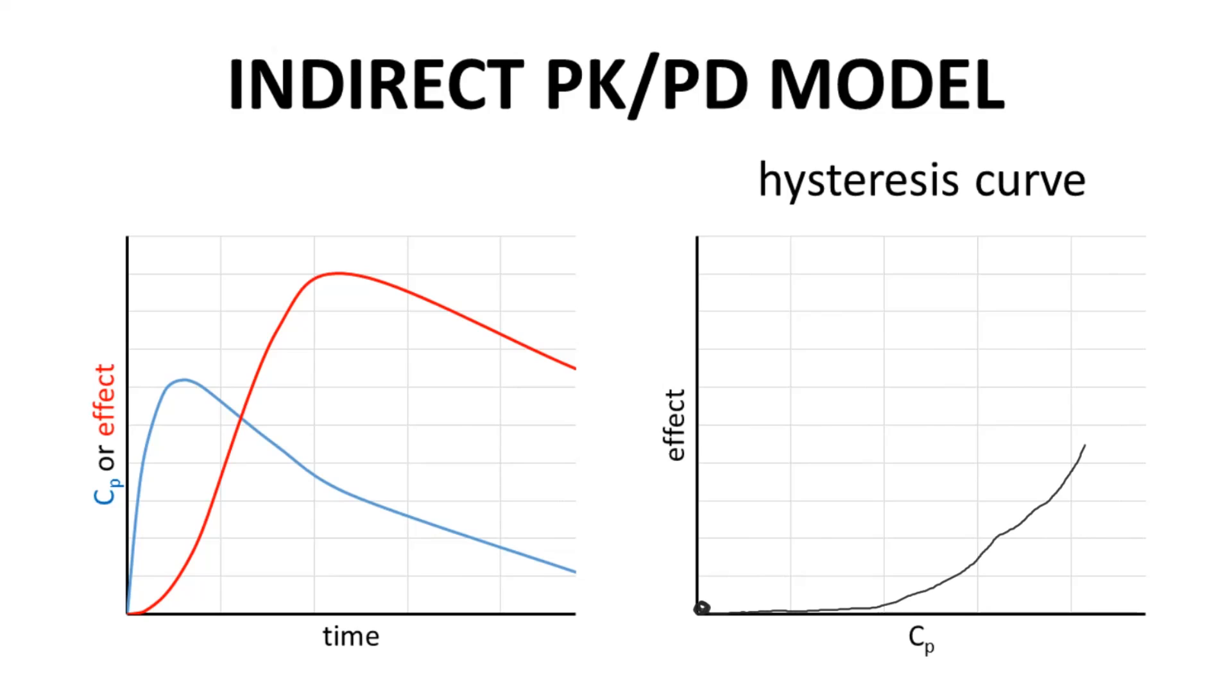Once CP reaches its maximum and begins to drop, effect is starting to really climb on the y-axis. Eventually, effect peaks and both values begin to drop.